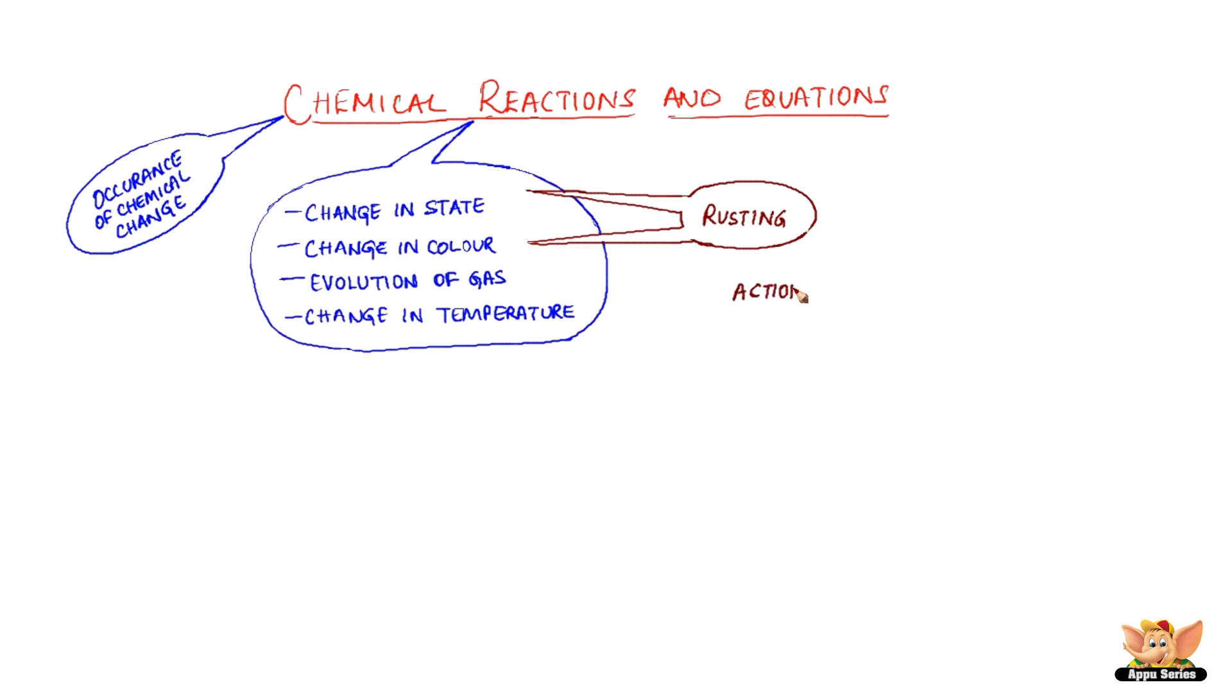In the chemical reaction of dilute sulfuric acid on zinc, there is evolution of hydrogen as well as rise in temperature. Can you think of some more chemical reactions and observe changes?